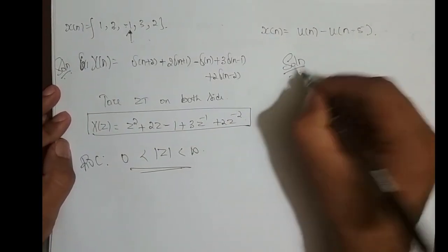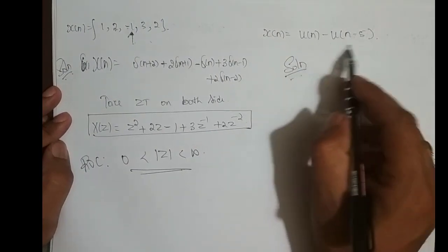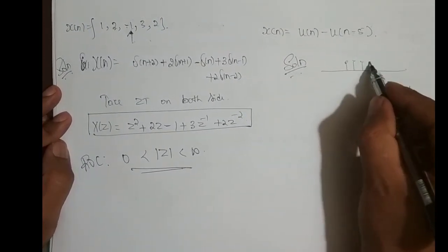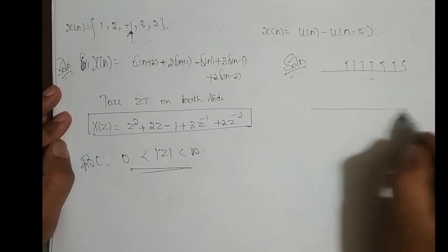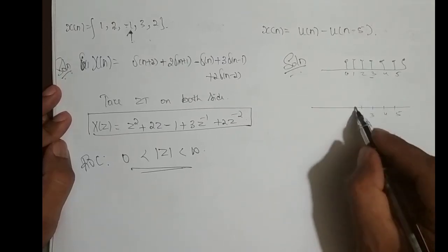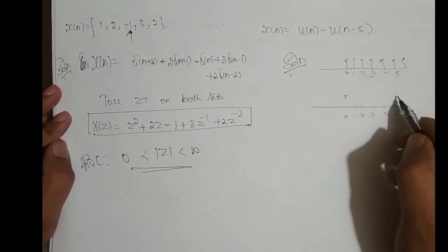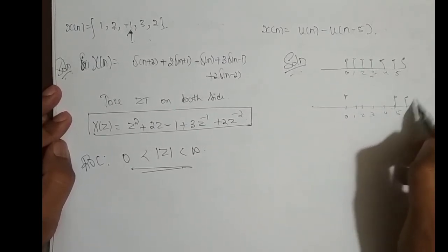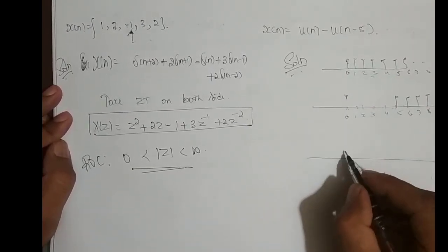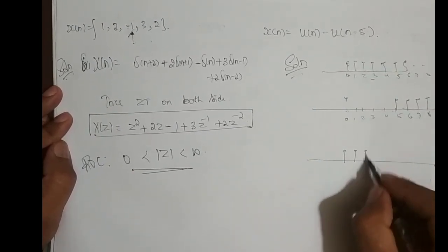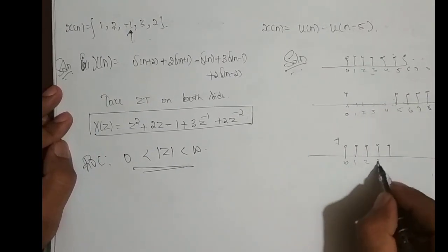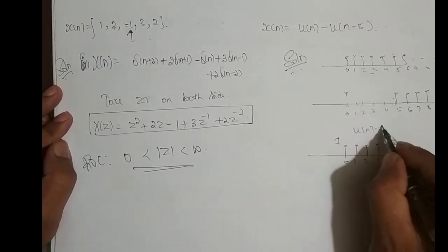Next sequence is X(n) = u(n) minus u(n minus 5). Do you remember this sequence? It is a finite length sequence. u(n) runs from n = 0, 1, 2, 3, 4, 5 and when shifted right 5 times starts from n = 5. Subtracting: 1 minus 0 = 1 at n = 0, 1, 2, 3, 4. So this is the sequence u(n) minus u(n minus 5), giving values of 1 at n = 0 through 4.